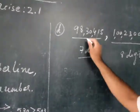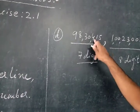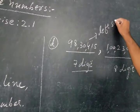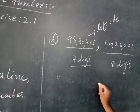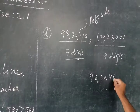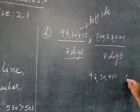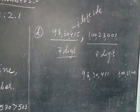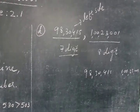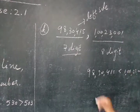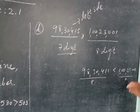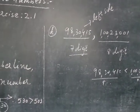So 98,30,450 is lying on the left side. The sign between them: less than, because the 7-digit number is smaller than the 8-digit number. Very good. Now go for example number 8.